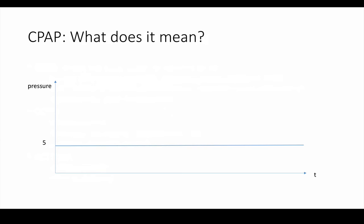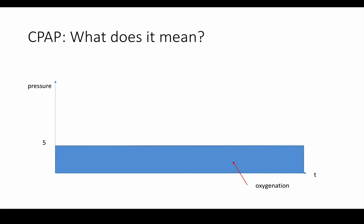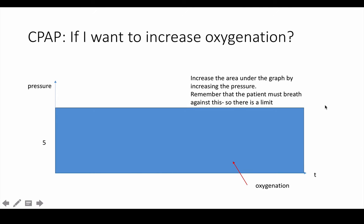What does CPAP mean? It means there is a constant pressure. As you can see on this graph, there's a constant pressure provided. The patient breathes up and down against that pressure, and the minimum pressure is 5 centimetres of water. If you look at the area under the graph drawn at that 5 centimetres of water line, that actually represents the oxygenation. So if you want to increase the oxygenation, you basically increase the pressure — you increase the area under the curve. The problem is that the patient still has to breathe against that pressure, which may increase the work of breathing.